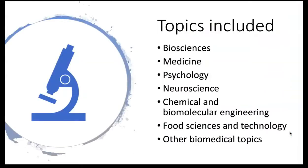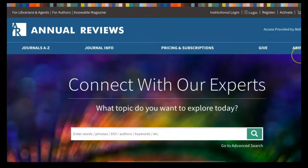In this collection, you can find information about biosciences, medicine, psychology, neuroscience, chemical and biomolecular engineering, food sciences and technology, and other biomedical topics. You can access over 25 review journals from the publisher Annual Reviews, a highly respected publisher dedicated to review journals.